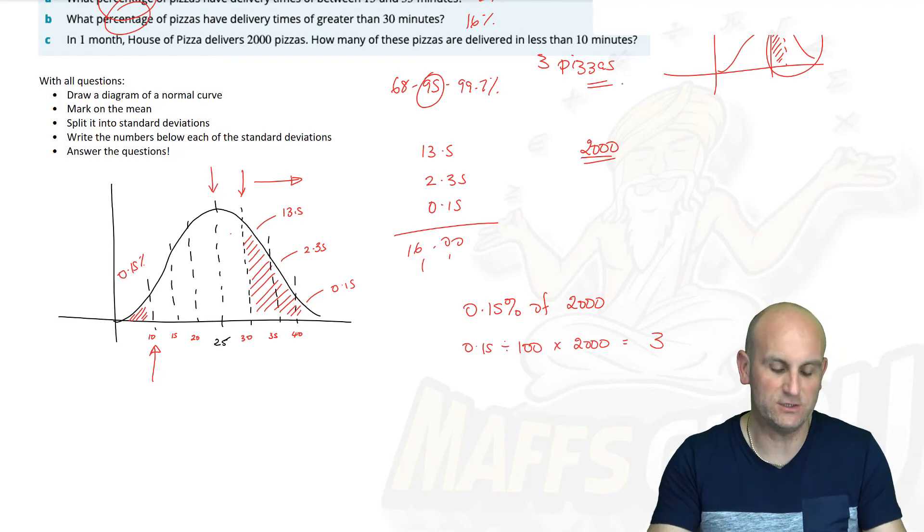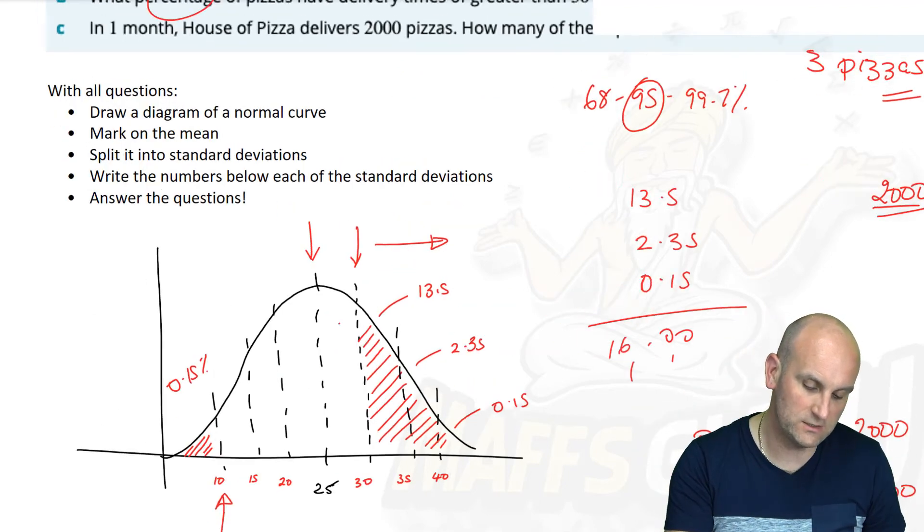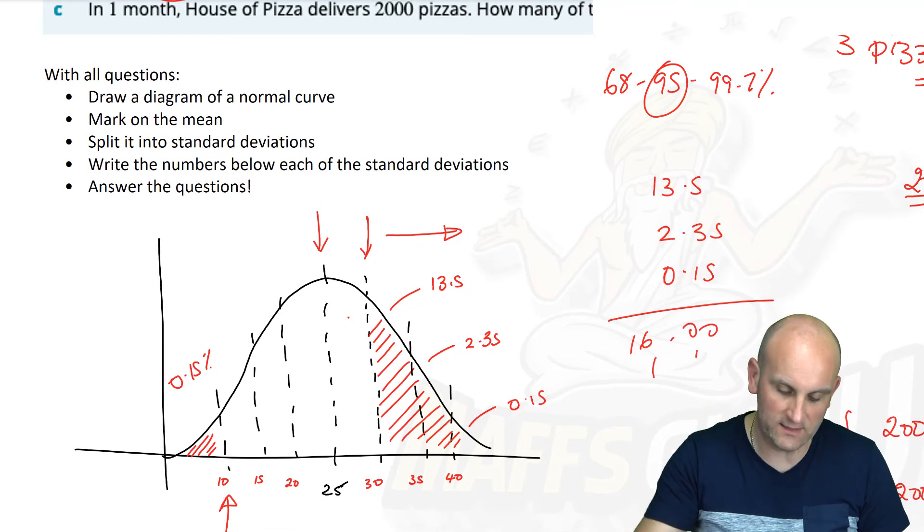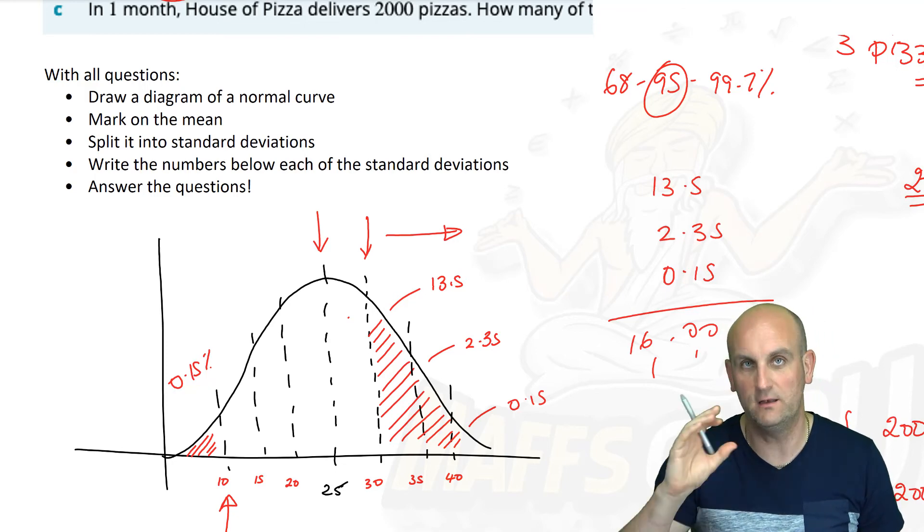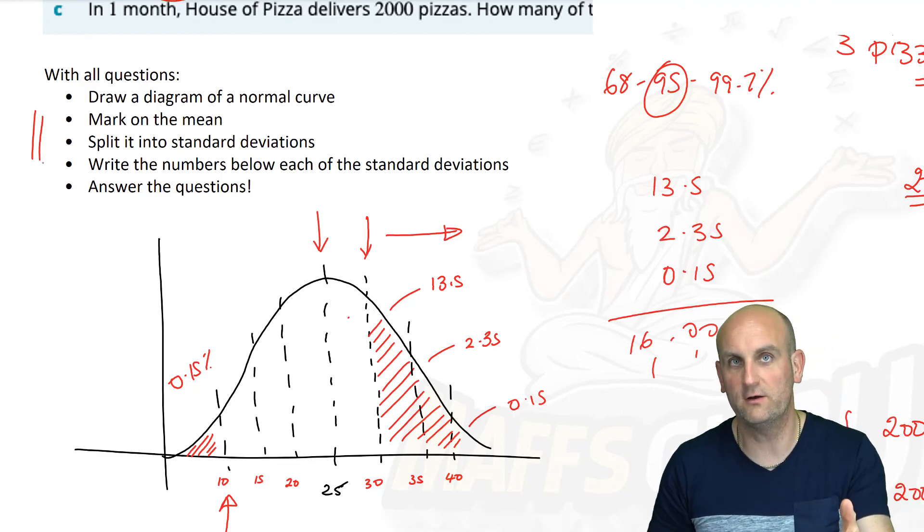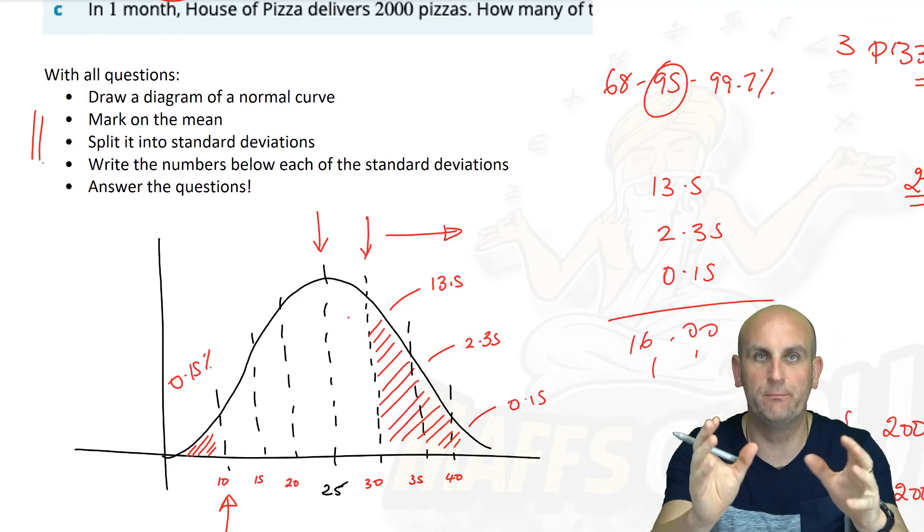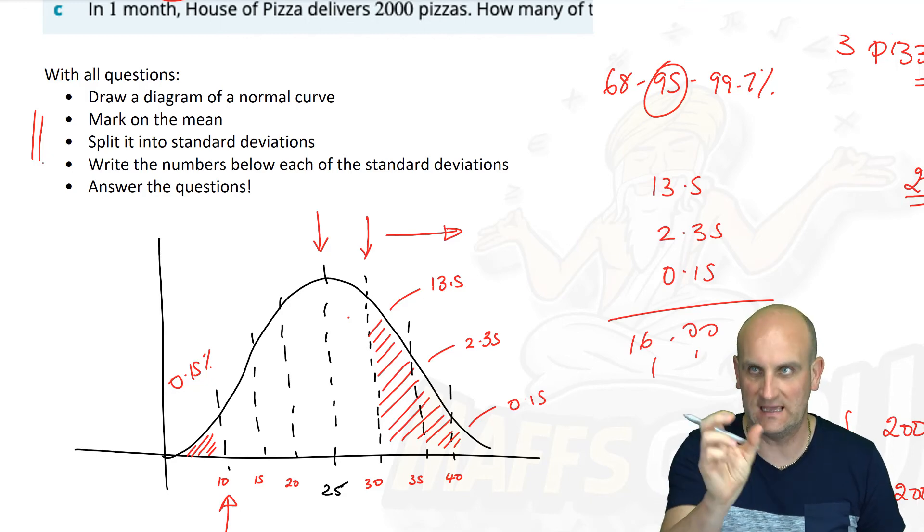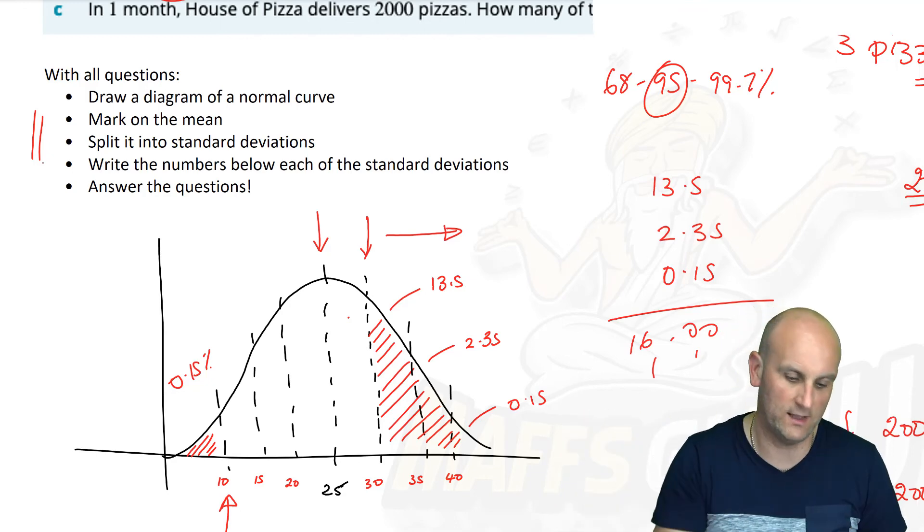The questions you are going to get are so similar. Once you've done it a few times and you work out it's about coloring in that chart we did, you will ace all of these questions. With all questions, draw a diagram of the normal curve. Don't try and visualize it. Mark on the mean, split into the standard deviations, draw those dotted lines, write the numbers below each of the standard deviations, and then just answer the questions by coloring in the sections.